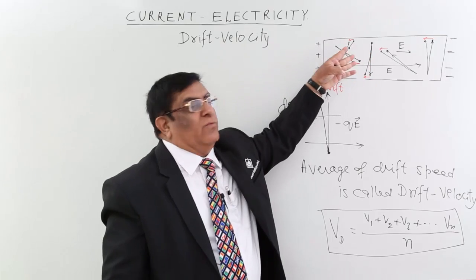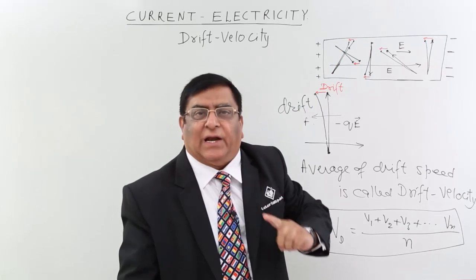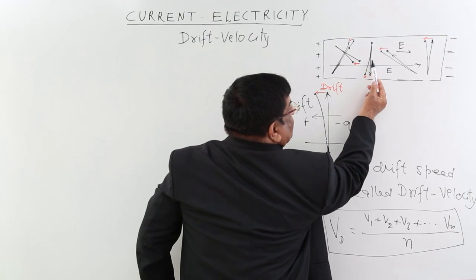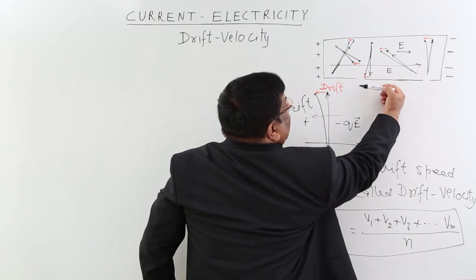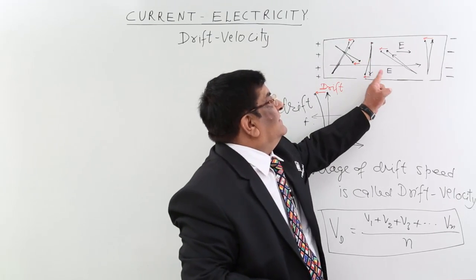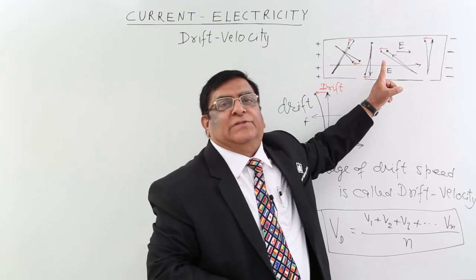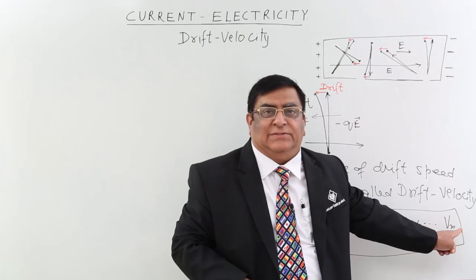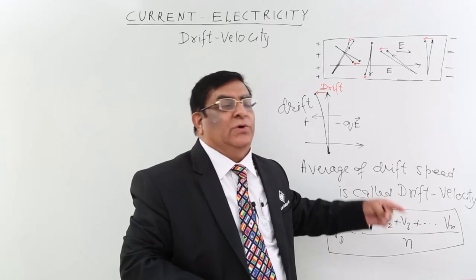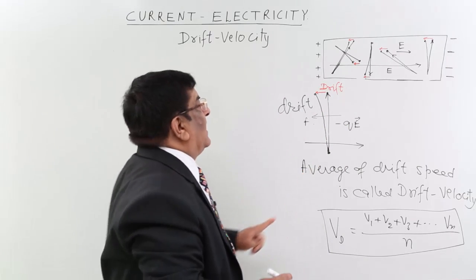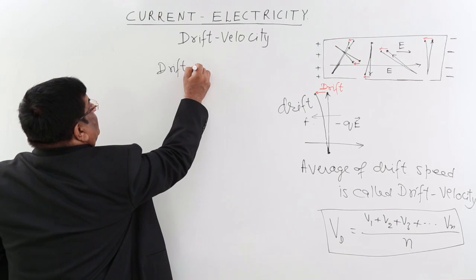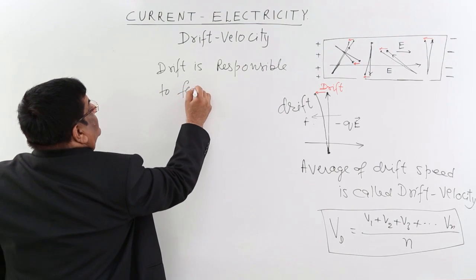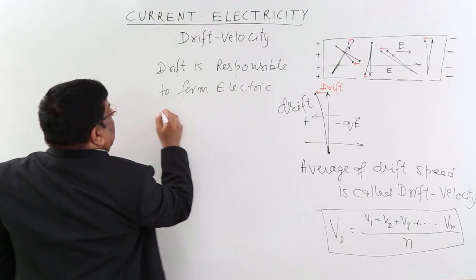Because all electrons are moving in one direction, and our definition of electric current is that motion of charge makes electric current. There are two motions: thermal motion and drift motion due to electric field. Thermal motions cancel out each other — therefore net thermal velocity is zero and does not make any current. Drift velocities add up in millions, they do not cancel each other, and have a finite value. So drift velocity is responsible to form electric current.